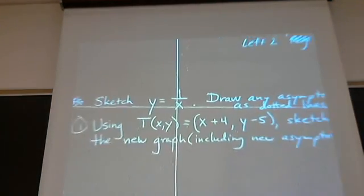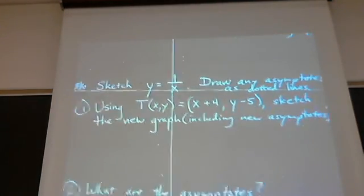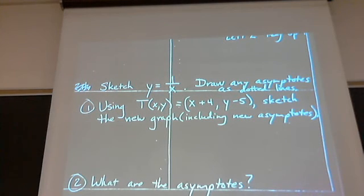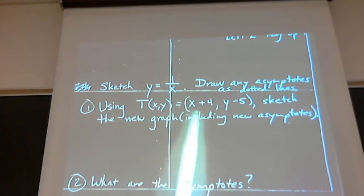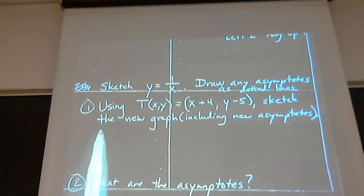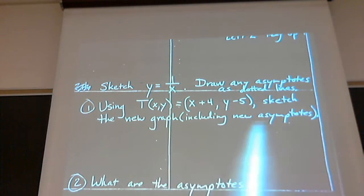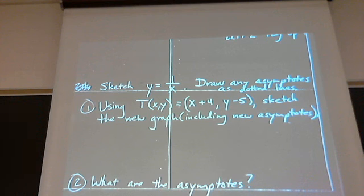Now, what do I want you to do? I want you to sketch y equals one over x. I want you to draw any asymptotes as dotted lines. I want you to use this translation rule of x plus four and y minus five. And I want you to sketch the new graph, including any new asymptotes. And lastly, I want to know, what are the new asymptotes? So, you make the equations of those and bring those to class in your notes. Talk to you then.